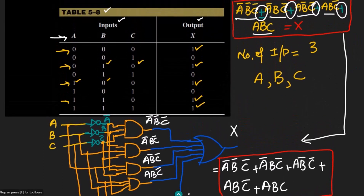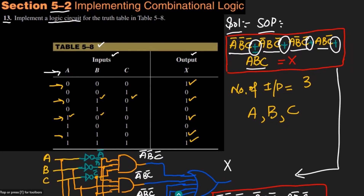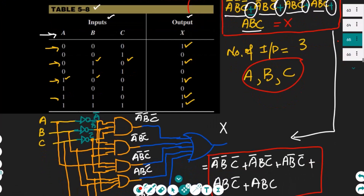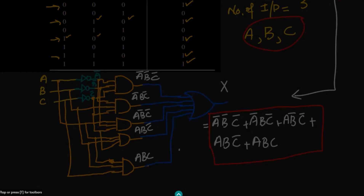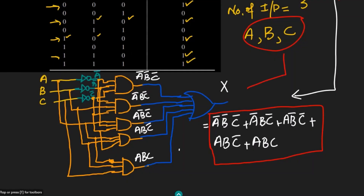That is it for today. We have seen the solution for question 13, where first the truth table is converted to SOP form, then the domain is identified, and finally the entire expression is implemented as a logic circuit using inverters, AND gates, and an OR gate. I hope all the steps are clear and I hope to see you again with another video demonstrating the solution of other questions in this section.